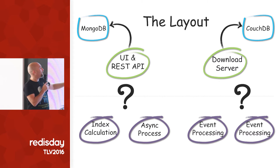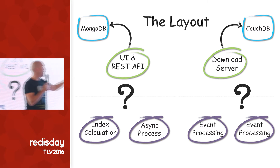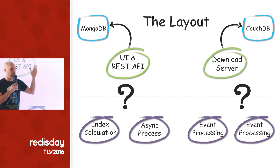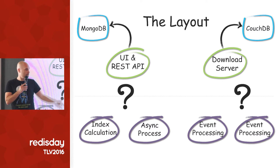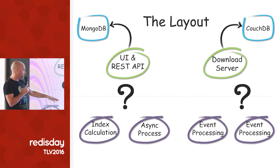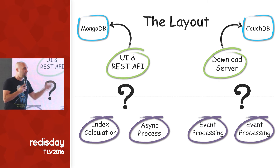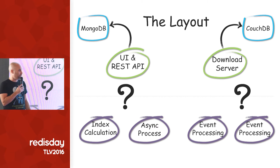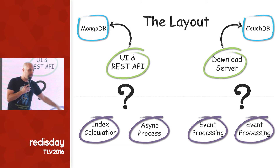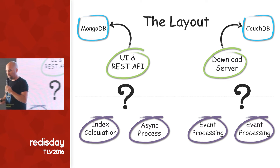The layout looks like this: the REST API is served with MongoDB, and the download server uses CouchDB. Both can work independently of each other, so even if one fails, we'll still serve downloads and vice versa. Then we have all the backend services. The big question mark is what sits in the middle, because the user-facing operations are synchronous while the backend processes are async, and we were looking for something to work between them.